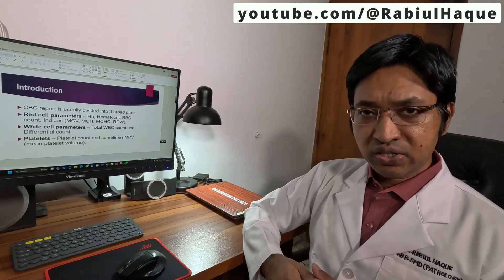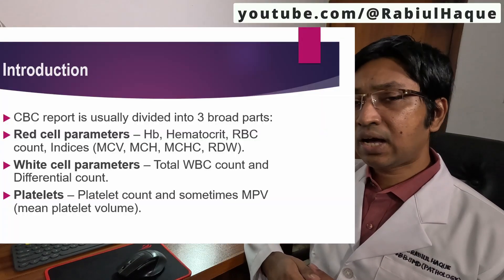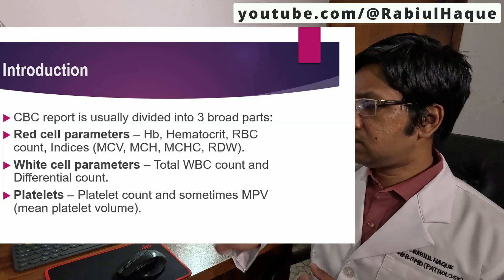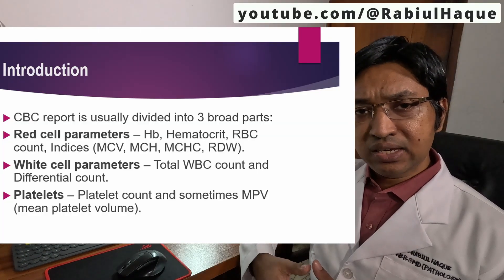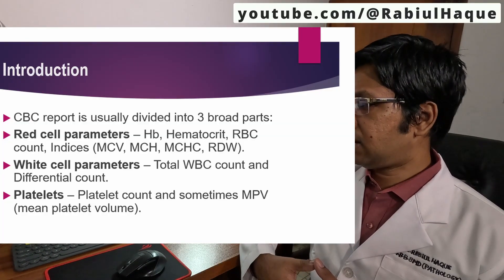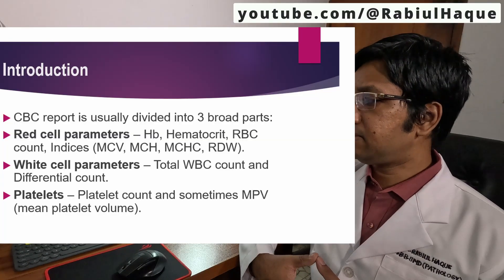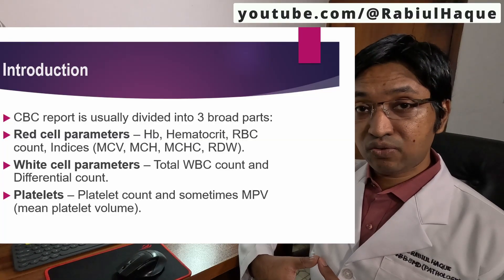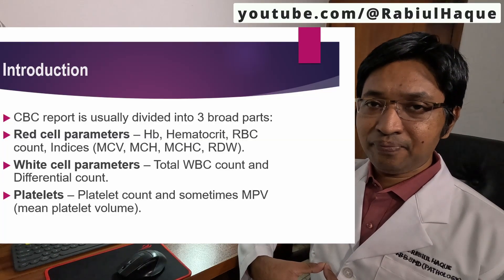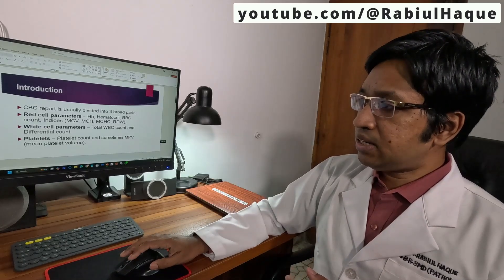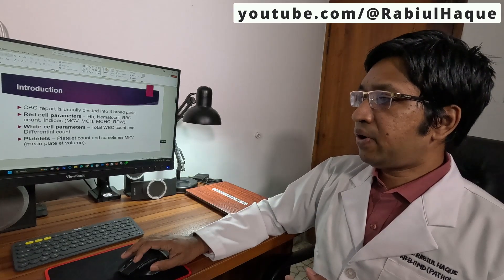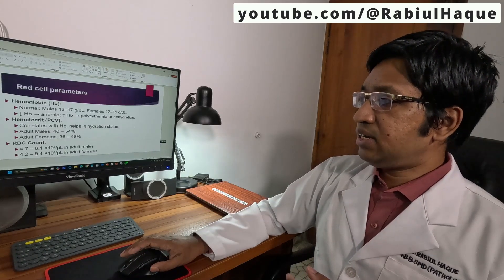In the white cell parameters, we will talk about total WBC count and differential count. And in the platelet parameters, we will mainly talk about the platelet count and mean platelet volume or MPV. So let's start with the red cell parameters, and the first parameter is hemoglobin concentration.